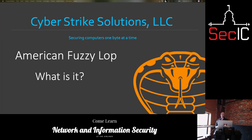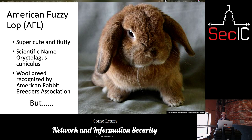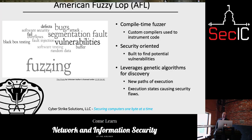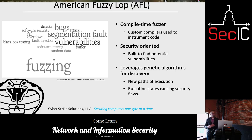So what is American Fuzzy Lop? It's super cute and fluffy. Its scientific name is Oryctolagus Cuniculus, and it's a wool breed recognized by the American Rabbit Breeders Association. But we're not talking about that American Fuzzy Lop — we're talking about the American Fuzzy Lop that is a compile-time fuzzer.